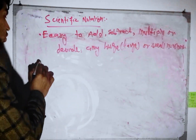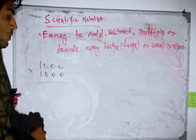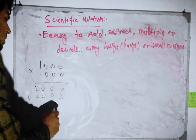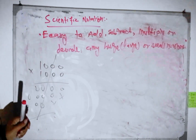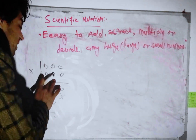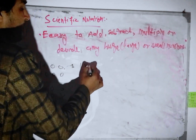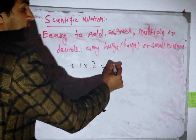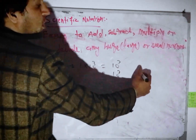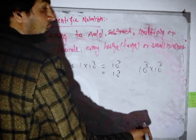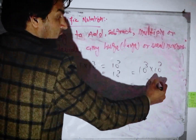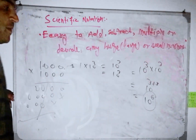For example, consider a thousand times a thousand. In scientific notation: 1 multiplied by 10 power 3, times 1 multiplied by 10 power 3. Since the bases are the same, powers are added: 3 plus 3 equals 6, giving 10 power 6. It's very easy.